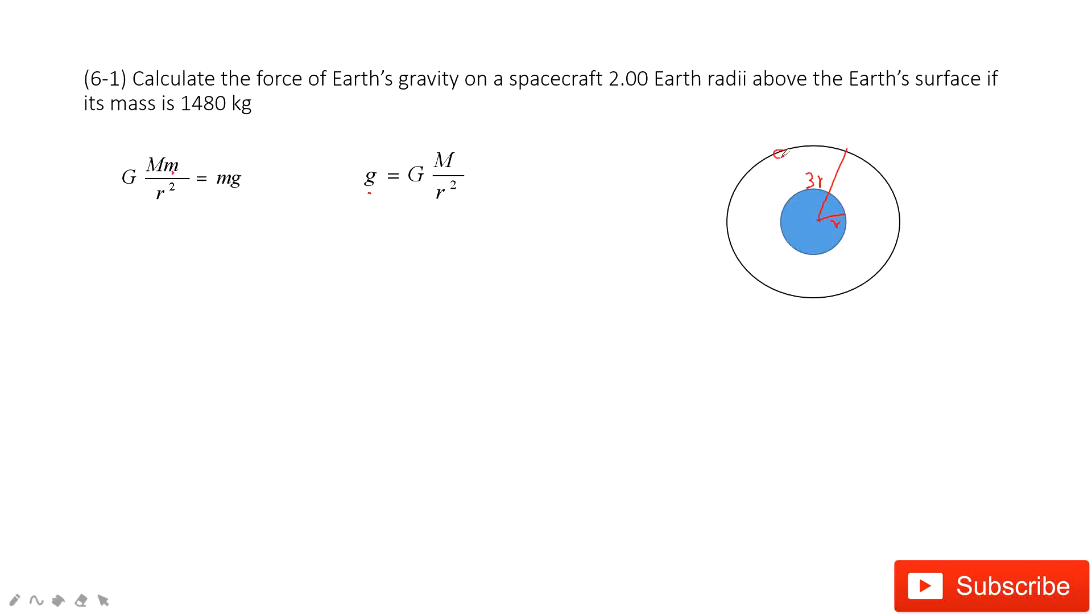Next, if we consider the object is there, this radius becomes three times R. So we can find that this g in space is just one-ninth of the g on Earth. So we can consider this equation. This equation becomes g space divided by g Earth, so it's one-ninth of the gravity on Earth.